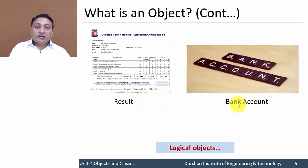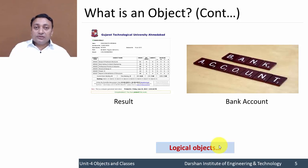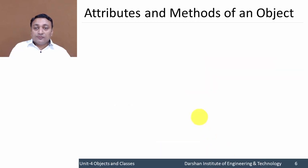Same way we can have university, result, bank account, login form — these all are logical objects. Programming objects are nearly similar to real-world objects. In object-oriented programming, all computations are carried out using objects. So let us discuss attributes and methods of an object.